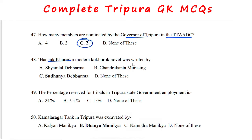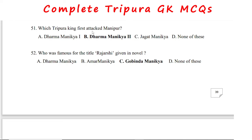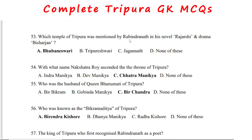Hachukh Khuriya, a modern Khokhborok novel, was written by Sudhan Dhabbarma. The percentage reserved for tribals in Tripura state government employment is 31%. The Kamala Sagar tank in Tripura was excavated by Maharaja Dhanamanika. The Tripura king who first attacked Manipur was Dharmamanika II.